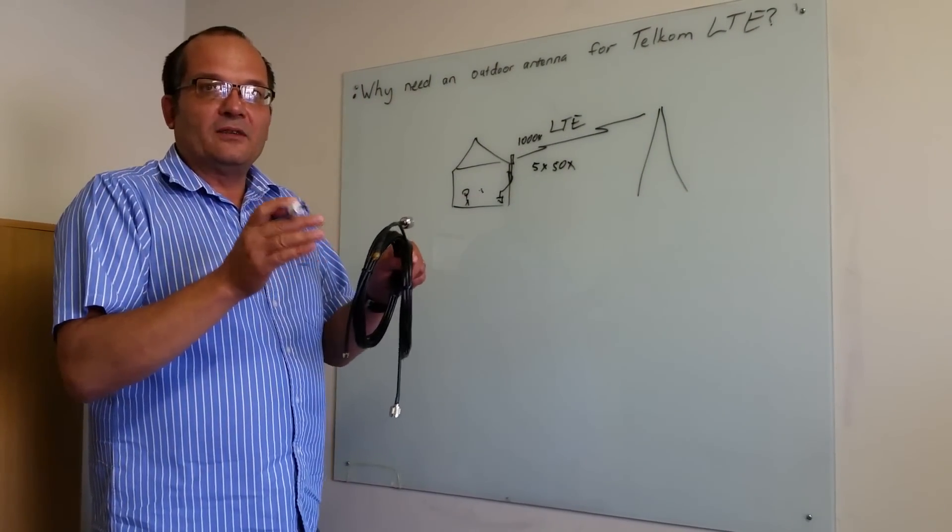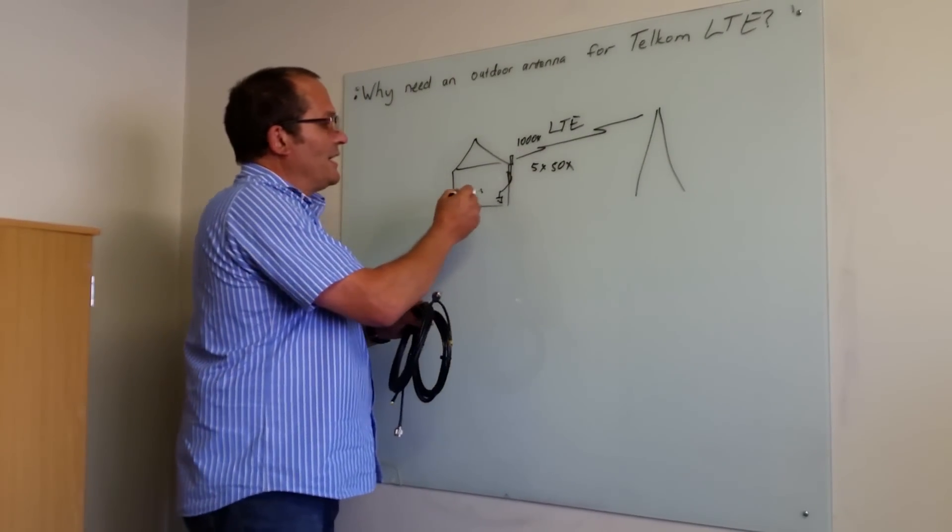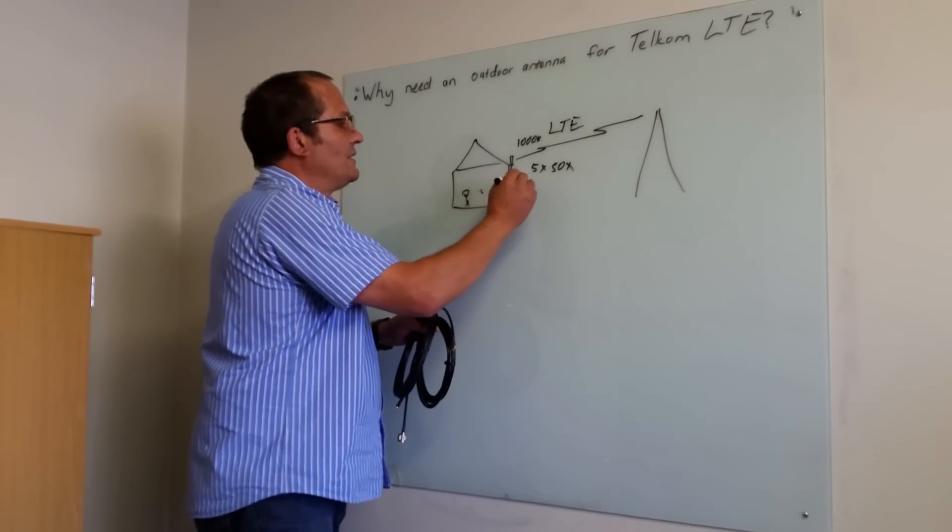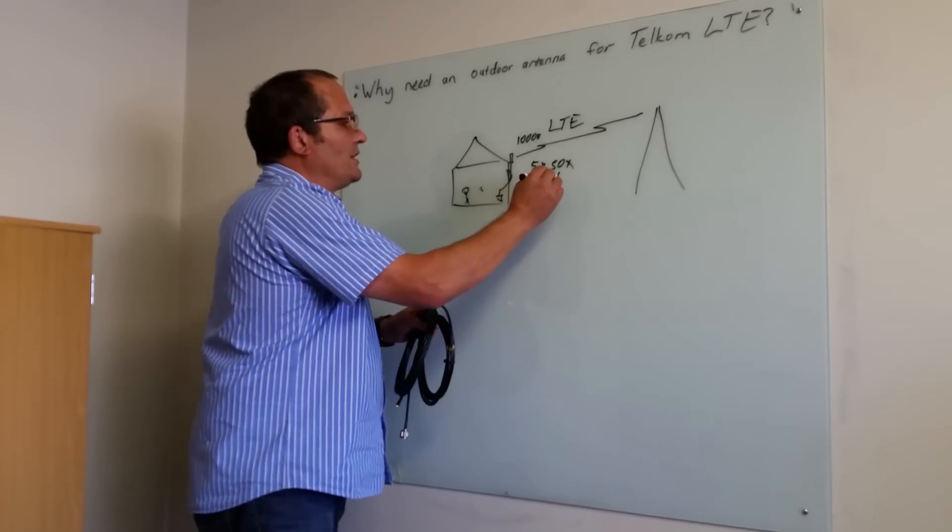LTE reduces the data rate in order to cope with bad signal. And even though you get internet indoors, it will be terrible. Also, very unreliable if you put it indoors.